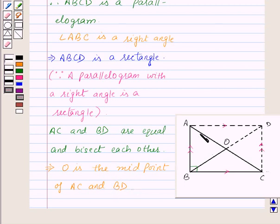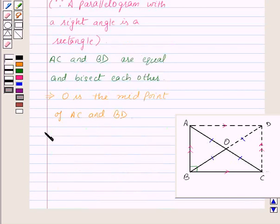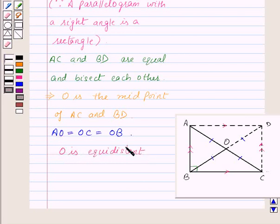Therefore AO equals OC equals OB equals OD. But we need to show that AO equals OC equals OB, or we can say that O is equidistant from A, B and C.